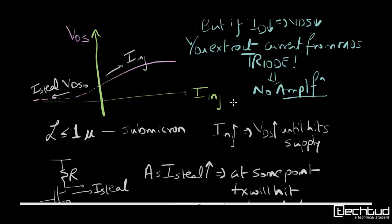For understanding, I have shown the same thing. Instead of replacing this current source I have put a resistor. Now if you are stealing the current, what you will see is that this transistor will definitely go to triode after some level of injection.